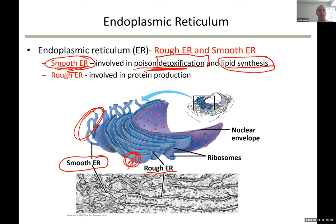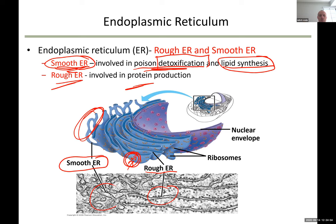Where would you have cells making lipids? In the fat cells around our body — the adipocytes, or cells that actually store fat. The rough ER is involved in protein production because it has ribosomes attached to it. Here you can see an electron microscope picture of rough ER versus smooth ER.